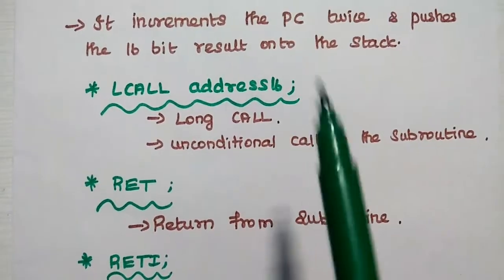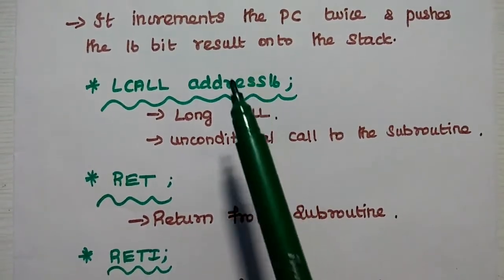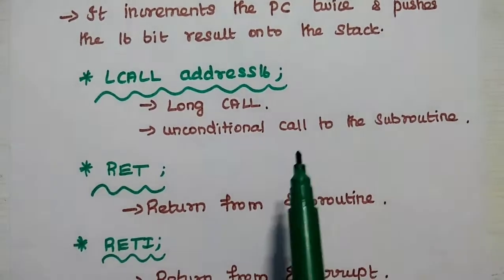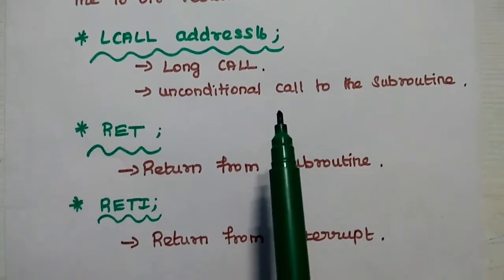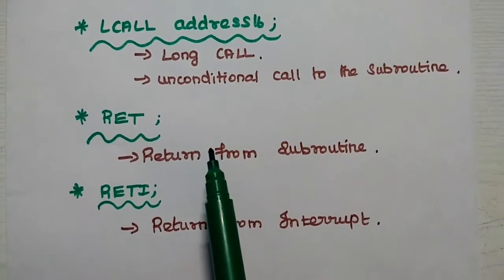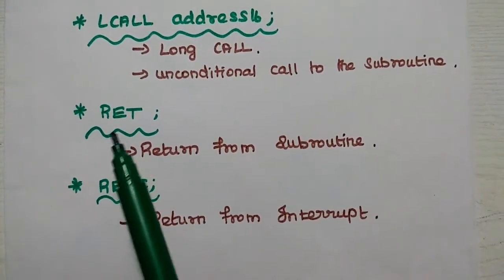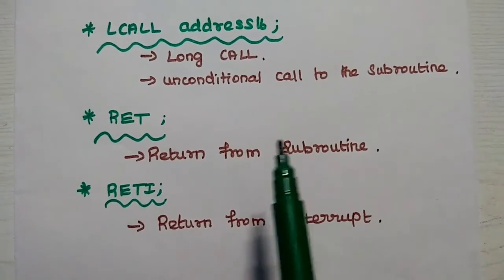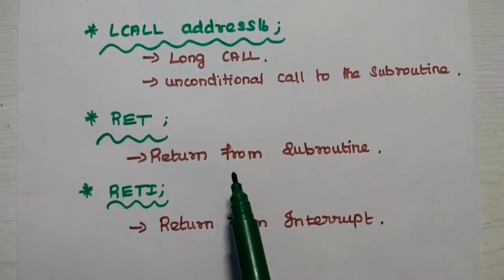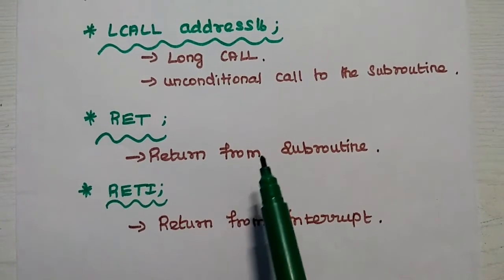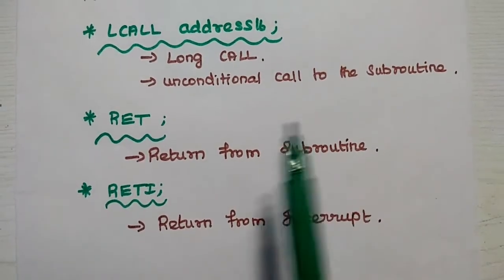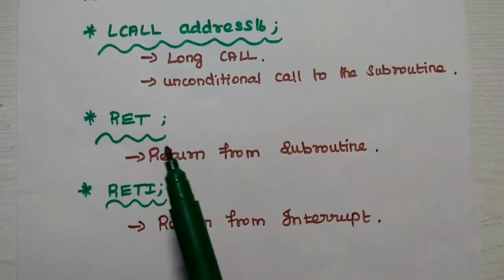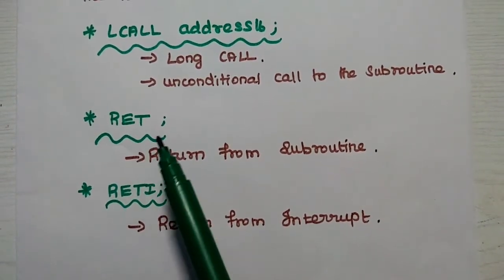The second call instruction is LCALL address16 — long call — an unconditional call to the subroutine. The same procedure is followed: the program counter address is stored onto the stack for use at the time of return. The RET instruction returns from the subroutine to the main program; it fetches the address from the stack and stores it into the program counter.